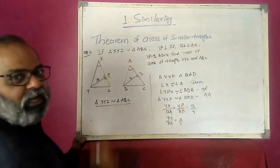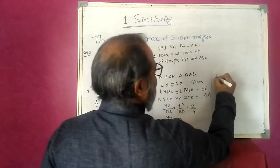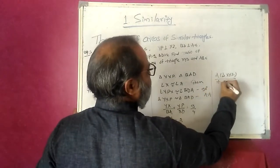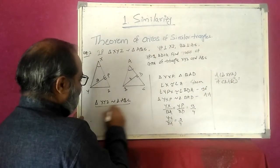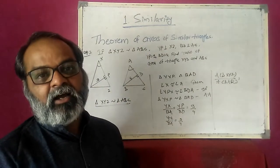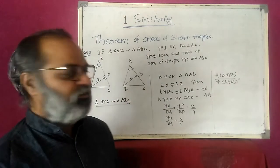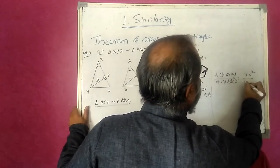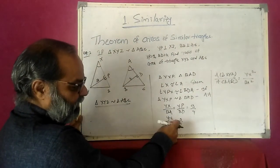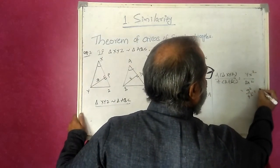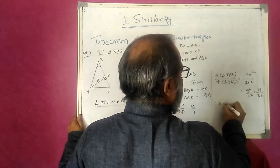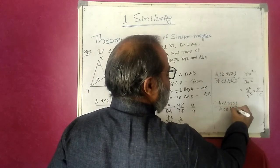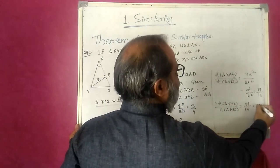Since YX/BA equals 9/4, and since triangles XYZ and ABC are similar, the ratio of their areas equals YX²/BA² equals 9²/4² equals 81/16. Therefore area of triangle XYZ / area of triangle ABC equals 81:16.